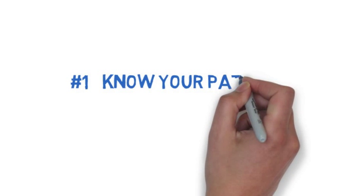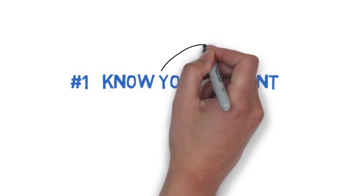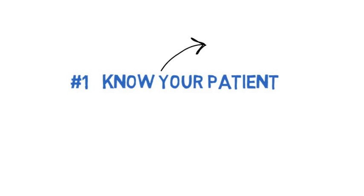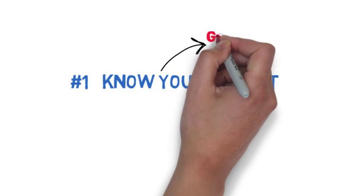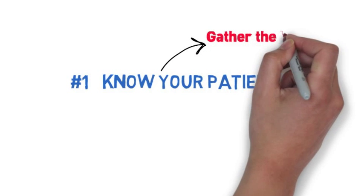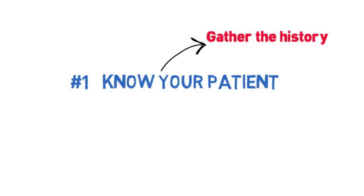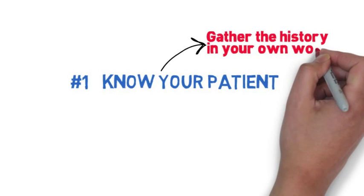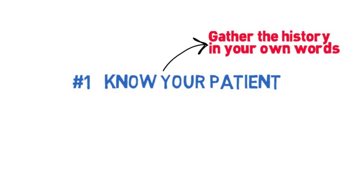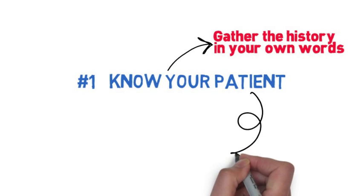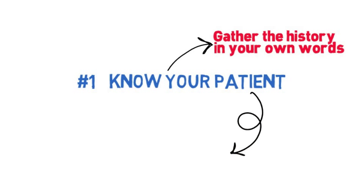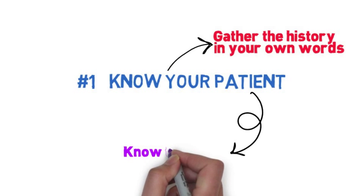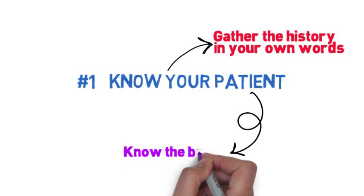Number one: know your patient. It's really important you know all the details about your patient. A lot of times we get a history and physical from the night team and they've written out a history that they've collected. It's really important you gather your own history in your own words — it makes it easier to memorize and repeat, so it looks really good when you're just saying stuff off the top of your head and not looking at a paper. And you get accurate data.